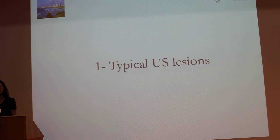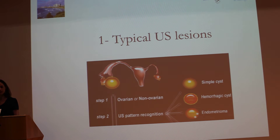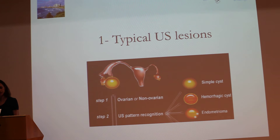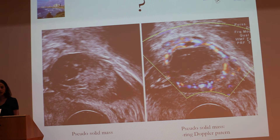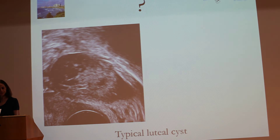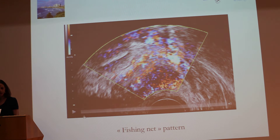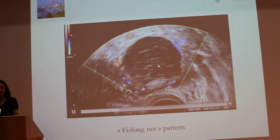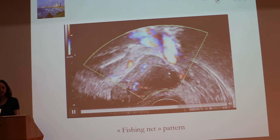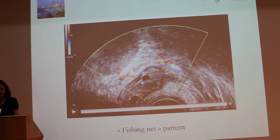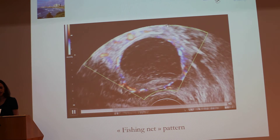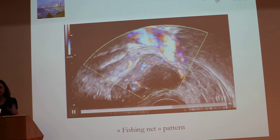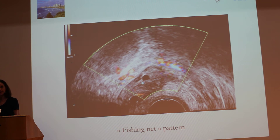The first situation is the easiest: the typical ultrasound lesion. The three main lesions are simple cysts, hemorrhagic cysts, endometrioma, and dermoid cysts. Here you have a pseudo-solid mass — perform Doppler and it is a typical luteal cyst. The fishnet pattern seen here is called fishnets; here is the endometrioma, and here you have the typical luteal cyst with all those little parietal lesions with no Doppler signal.